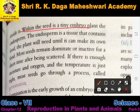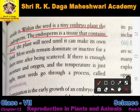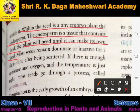Within the seed is a tiny embryo plant and the endosperm. Seed ke andar chhota sa embryo hota hai jo dhire dhire bada hokar ek naye plant mein develop hota hai. The endosperm is a tissue that contains food that the plant will need until it can make its own food.